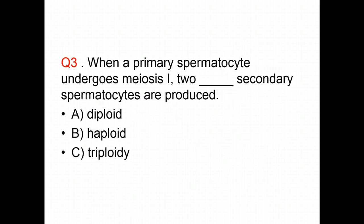Let us review. Question 3: When a primary spermatocyte undergoes meiosis 1, how many secondary spermatocytes are produced? Fill in the blank and choose the correct answer.